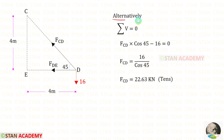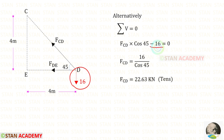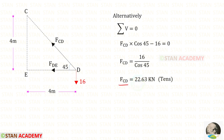Alternatively, we can apply sigma V equals 0 to find FCD. 16 is acting downwards, so it will be negative. FCD is inclined, so we have to make it vertical using 45 degrees. Since FCD is acting upwards, it will be positive, and we have to multiply with cos 45. In this way, for FCD, we will get 22.63 kilo Newtons.